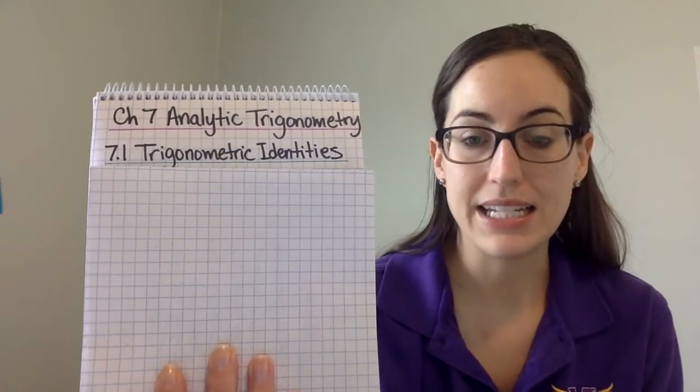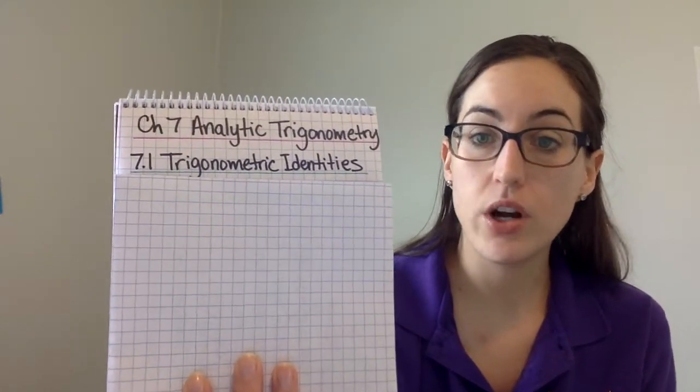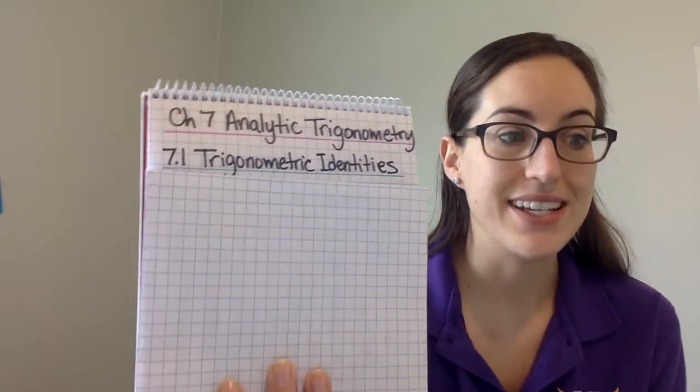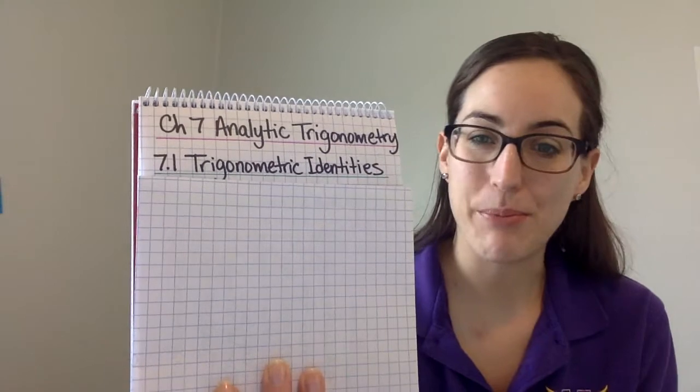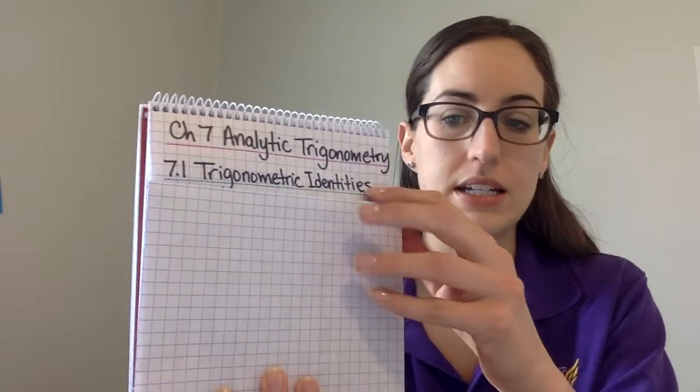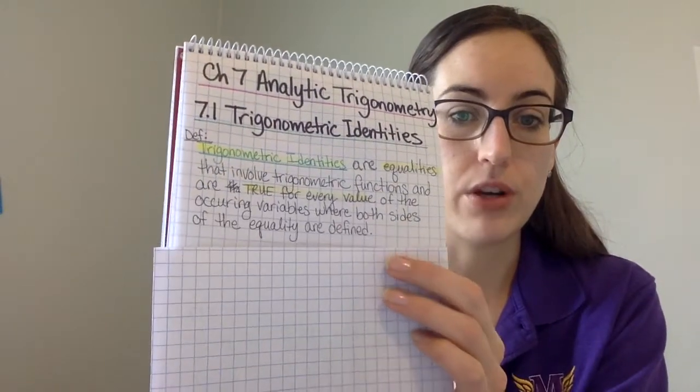So now it's more the algebra with the trig functions. Section 7.1, trigonometric identities. We're going to look at some of the identities. You've already seen many of these before, and we're going to start transforming them.